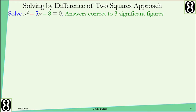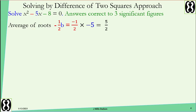Let's look at an example: x squared minus 5x minus 8 equals zero. First, find the average by dividing negative 5 by negative 2, which gives positive five over two. Five over two is the average. Form the expression for the roots: five over two plus k for one root and five over two minus k for the other. Second, multiply the roots and set equal to the constant, negative 8.